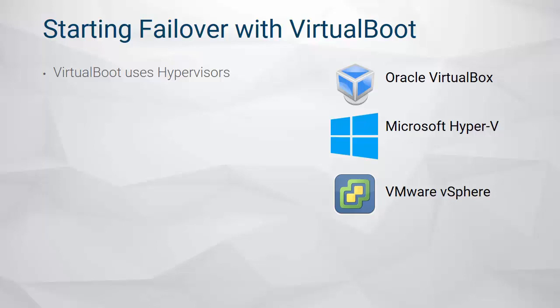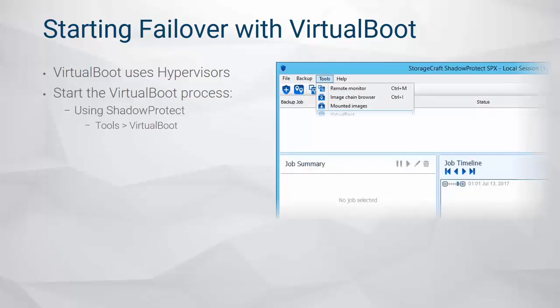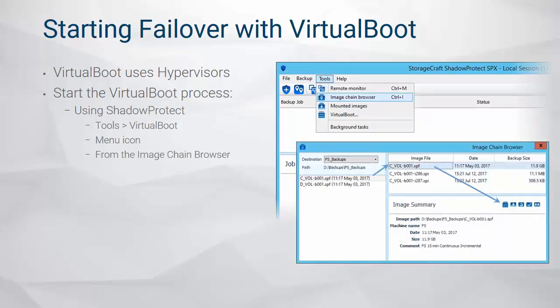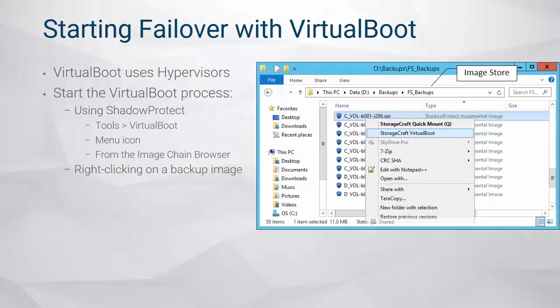Start the Virtual Boot wizard using any of the following methods. From within ShadowProtect, from the menu bar select Tools > Virtual Boot. Click the Virtual Boot icon, or select an image file from within the ImageChain browser and then click on the Virtual Boot icon. From your image store, right-click on an image and select StorageCraft Virtual Boot.